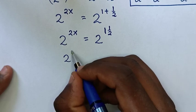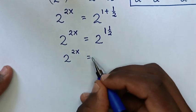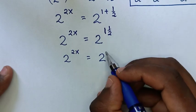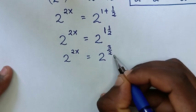So in the next step, it will be 2 to the power of 2x equals 2 to the power of, 2 times 1 is 2, 2 plus 1 is 3, so it will be 3 over 2.